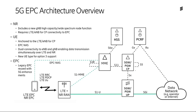One thing you will notice here is a separation of User Plane and Control Plane functionality. The User Plane functions of the Serving Gateway and the Packet Gateway are isolated from their Control Plane functions. Part of this is configuring the architecture to move more gracefully into the 5G core configuration in the future.